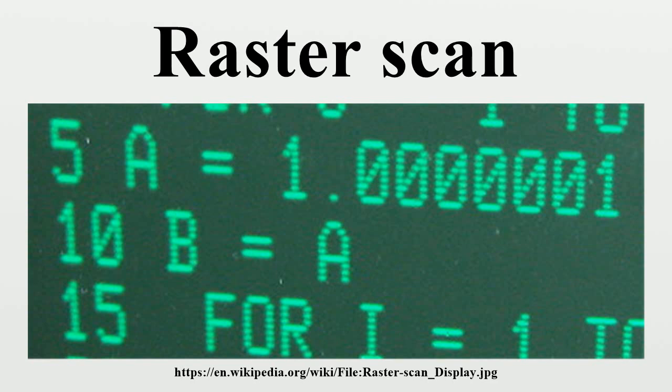Analog CRTs write only odd-numbered scan lines on the first vertical scan; then the even-numbered lines follow, placed between the odd-numbered lines. This is called interlaced scanning. Modern high-definition TV displays use data formats like progressive scanning as computer monitors do, or interlaced.